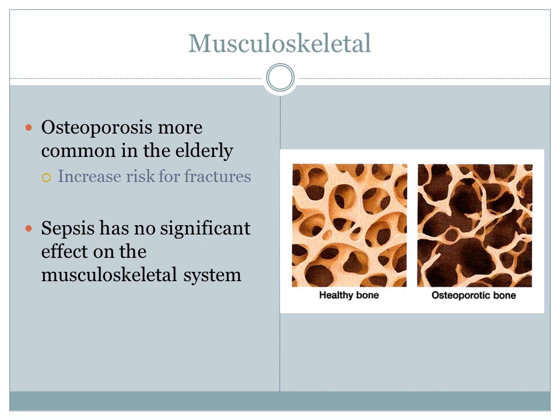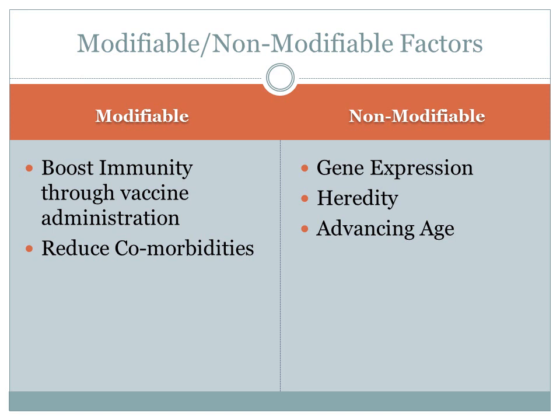When it comes to the musculoskeletal system, sepsis has no significant effect; however, there are changes related to the aging process. Bone loss and osteoporosis is more common in the elderly, leading to an increased risk for bone fractures. This is important to realize since sepsis can cause confusion, which can lead to more frequent falls. Fall prevention must be implemented for these patients to avoid injury and further complications.